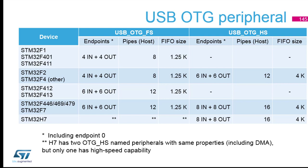On some H7 devices you can have two OTG high speed instances. They share the same properties, but only one can operate at high speed at a time — if one is running at high speed, the other cannot also be at high speed simultaneously.